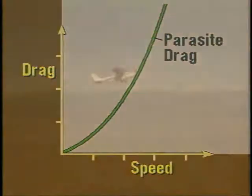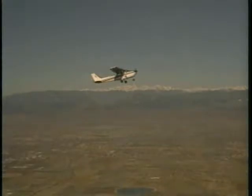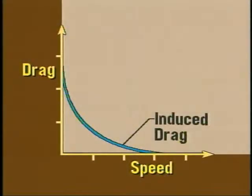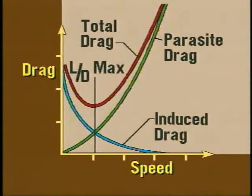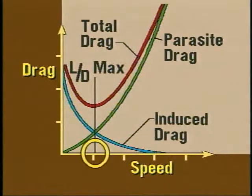As the speed of an airplane increases, the effects of parasite drag also increase. In contrast, induced drag is a direct byproduct of lift. It is greatest at slow speeds with a high angle of attack. Conversely, at higher speeds and at lower angles of attack, induced drag decreases. If the two drag curves are combined and the values added together, we can find a point where drag is at a minimum. This point is known as L over D max, which is where lift, when compared to drag, is at its greatest. In later sections, you will see that flying the airplane at this speed provides the best glide ratio and other performance benefits.